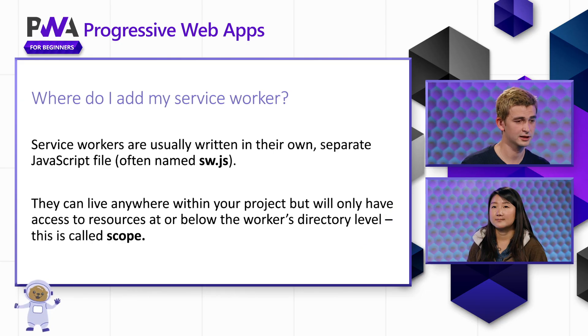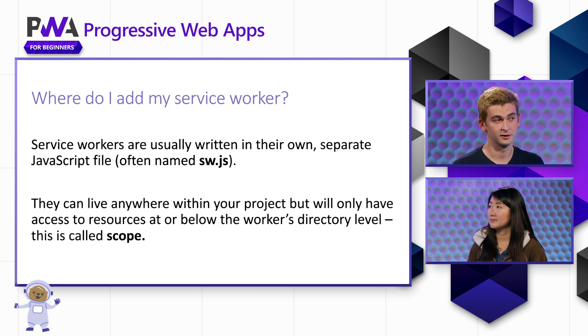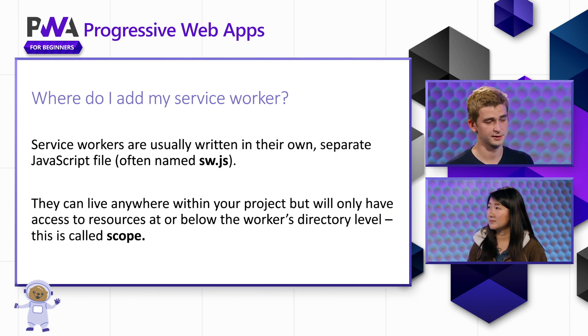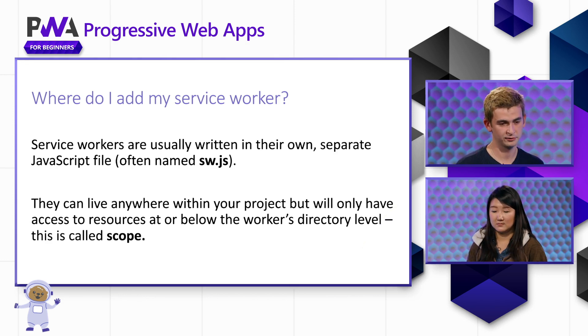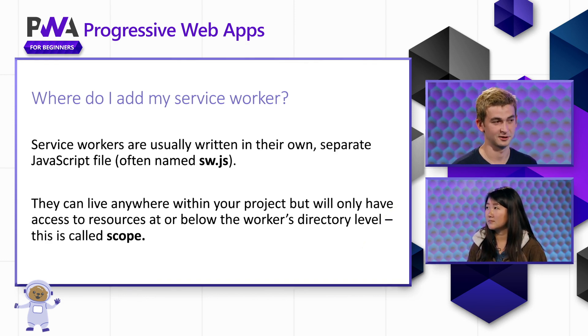Service workers are usually added in their own separate JavaScript file at the root of your project. This file is often called sw.js, but you can really call it whatever you want. One important thing to note is that service workers only have access to files at or below their current directory level, and this is why we usually have it at the root — so our service worker has access to everything.